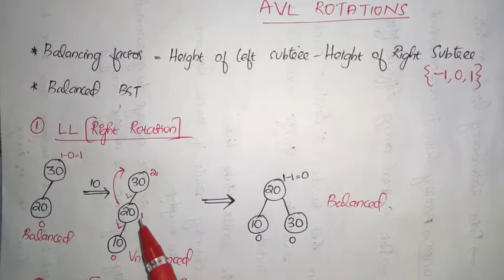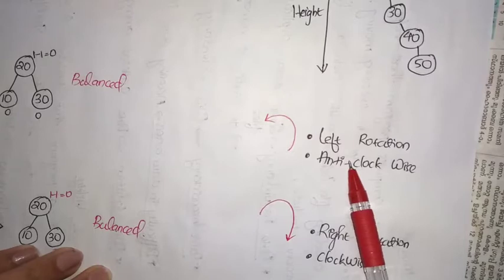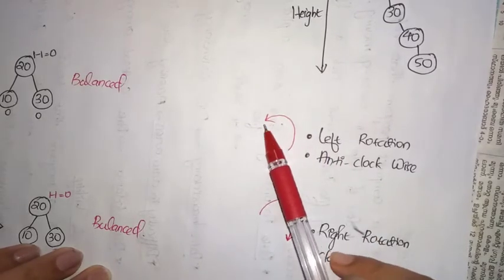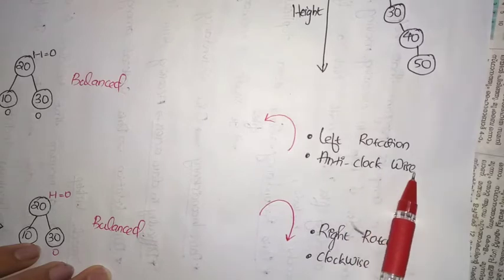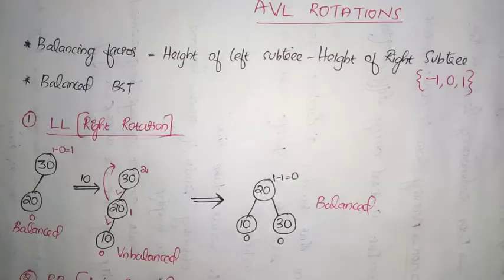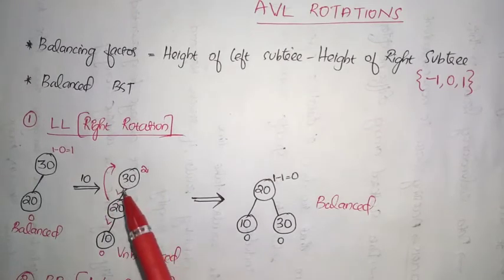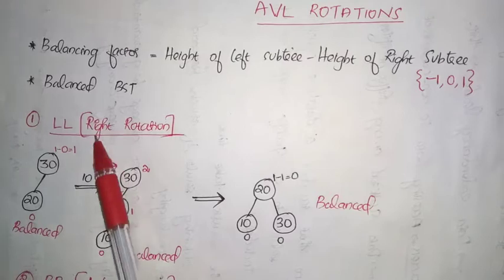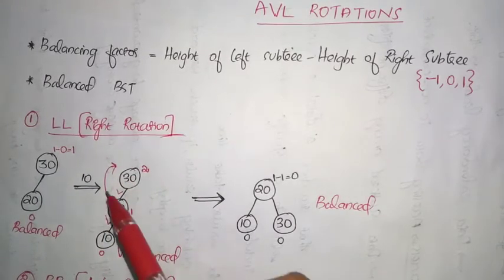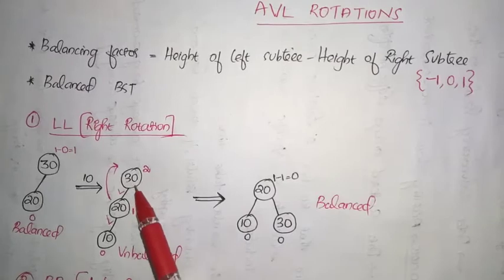In such a scenario, we need to perform a right rotation. A left rotation is in an anti-clockwise direction and a right rotation is in a clockwise direction. In the case of this Left-Left scenario, the rotation we need to perform is a right one — a clockwise direction rotation. So here we perform a rotation in the clockwise direction on the imbalanced node 30.